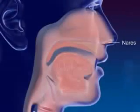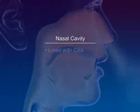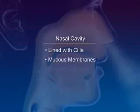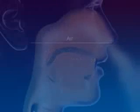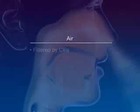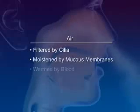Nairs are the openings to the nose. The nasal cavity is lined with cilia, mucous membranes, and blood capillaries. The air is filtered by cilia, moistened by mucous membranes, and warmed by the blood.